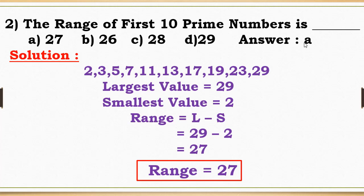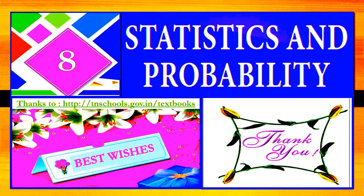Be careful with mistakes — if you mistakenly include 1 as a prime number, you would get the wrong last number and a different range, possibly choosing 27 or 28. In multiple choice questions, check your numbers carefully to get the full mark. Centum students get one mark easily this way.